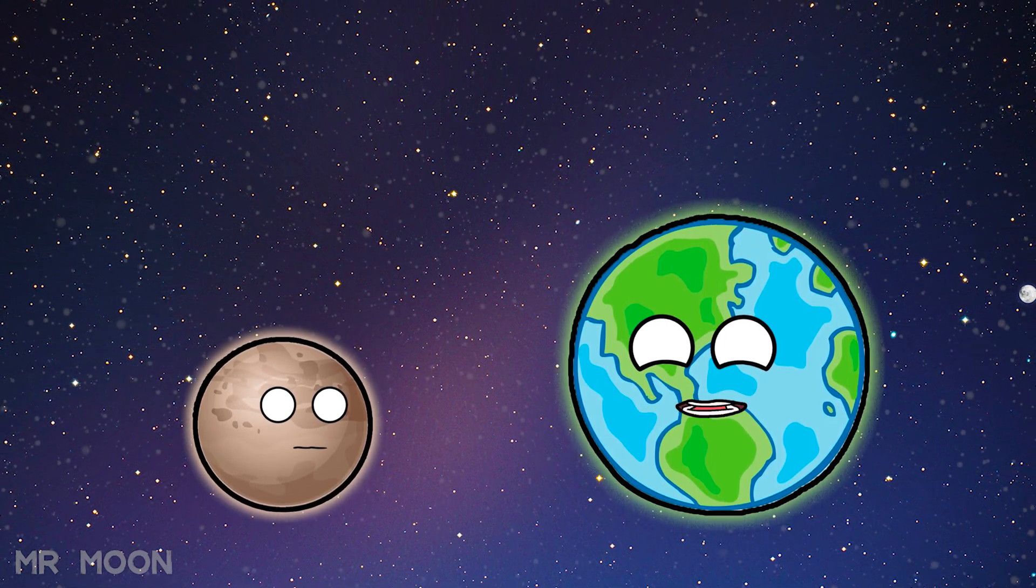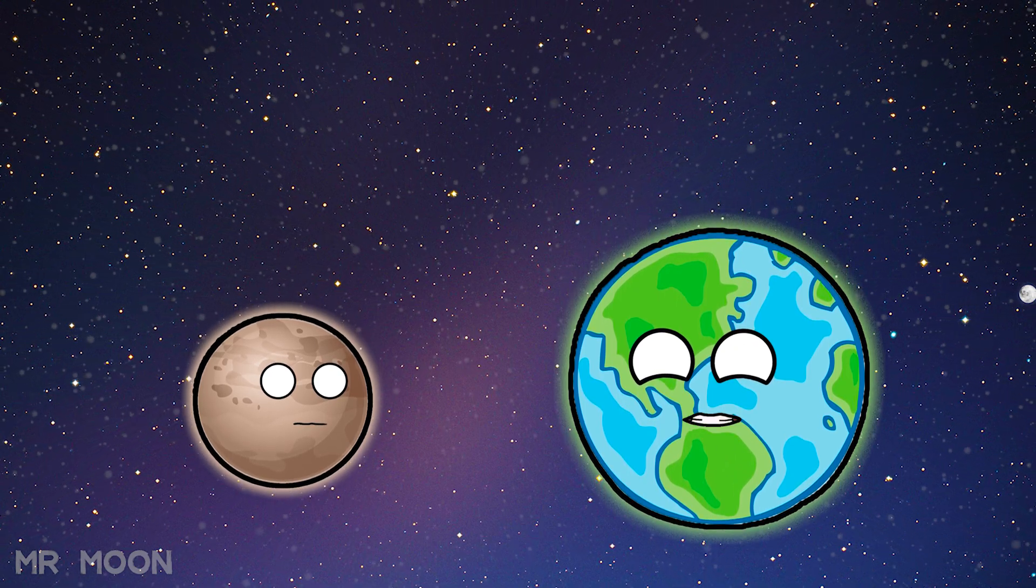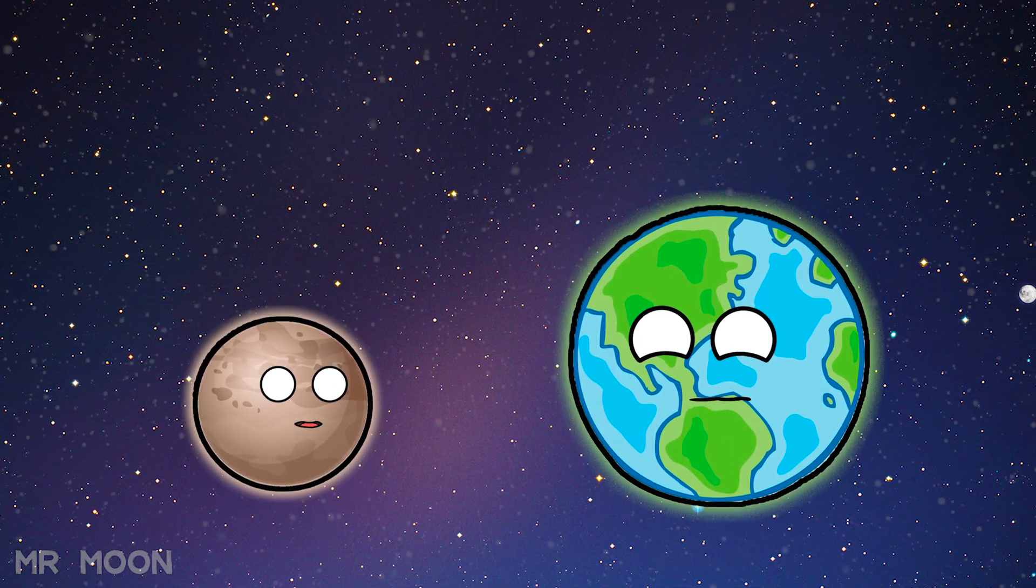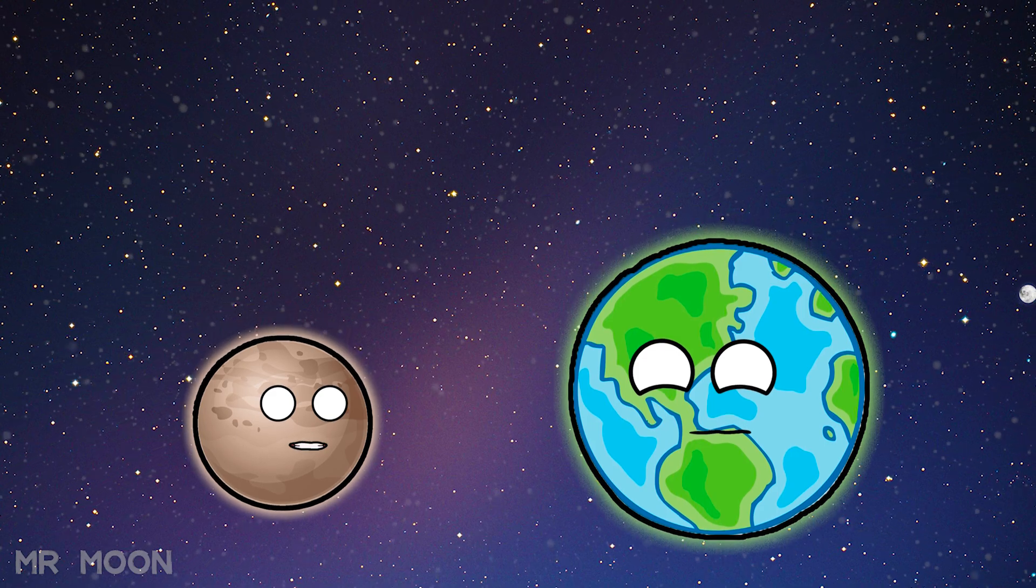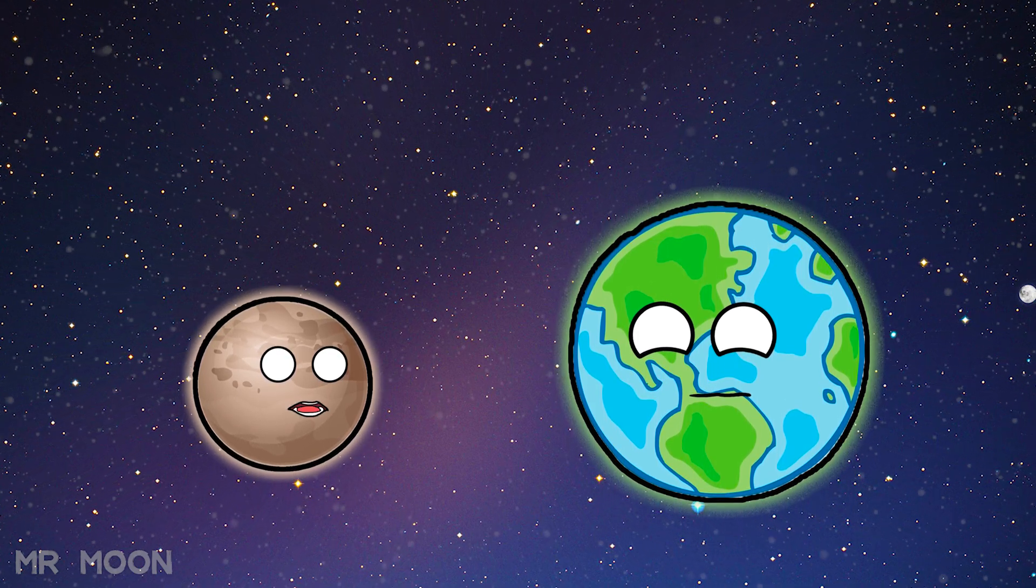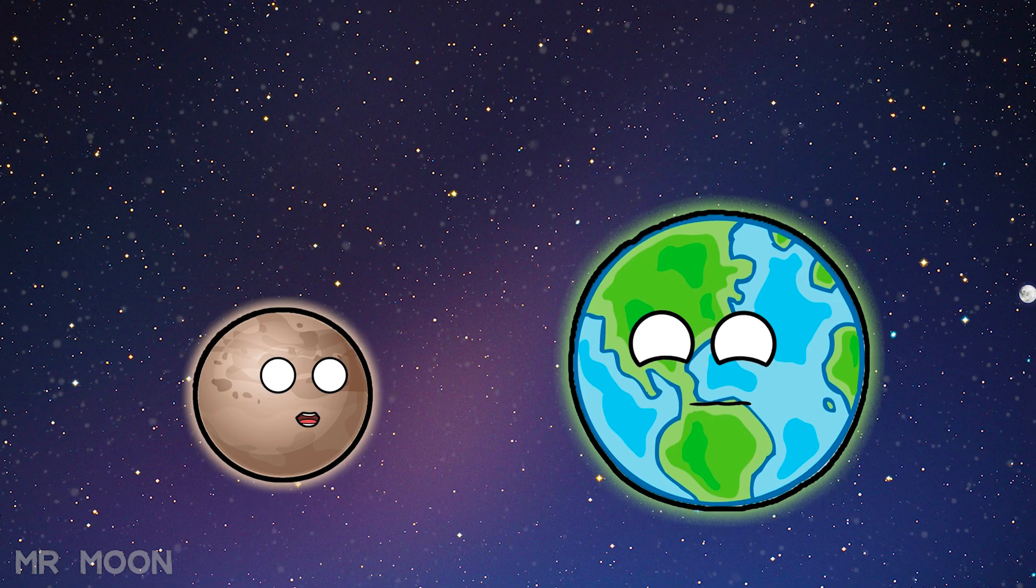Since you are so far from the sun, it must be that your days last longer? Yes. It takes me about 248 years to make a complete revolution around the sun, and one day I have is about 6 days on Earth.